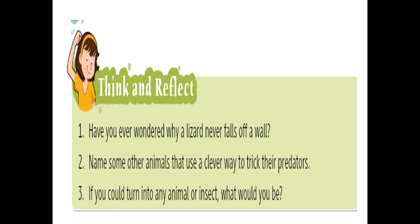Question two: name some other animals that use a clever way to trick their predators. A chameleon camouflages itself with its surroundings to trick its predator into thinking it is not there. Octopuses mimic other sea animals' appearances to protect themselves. So not only lizards — some other animals also have tricks to deal with their predators.